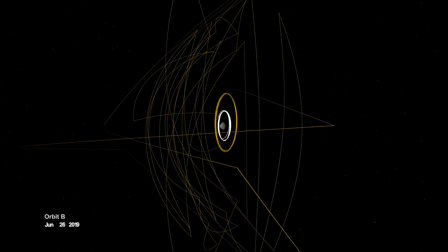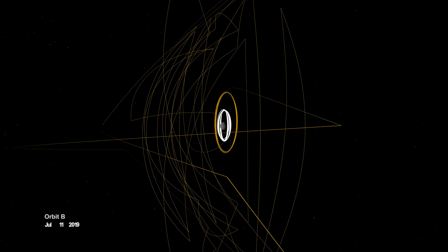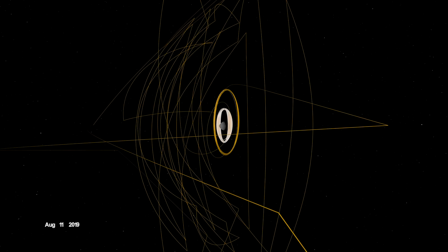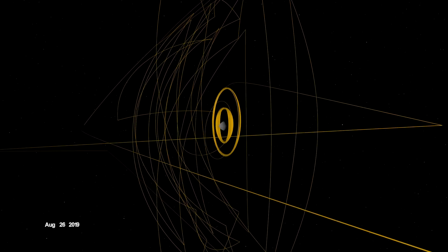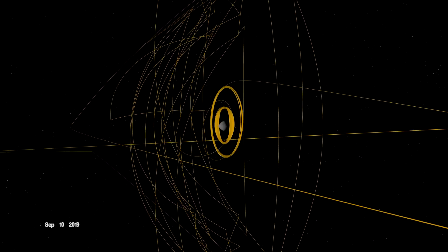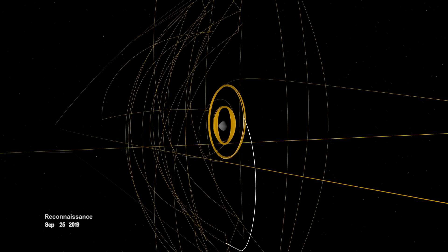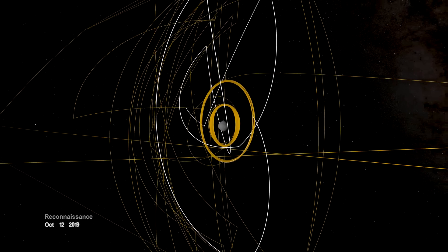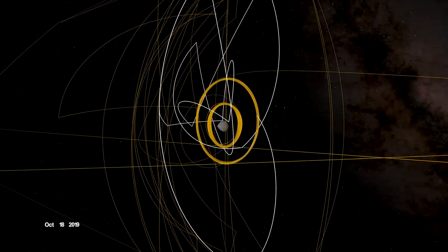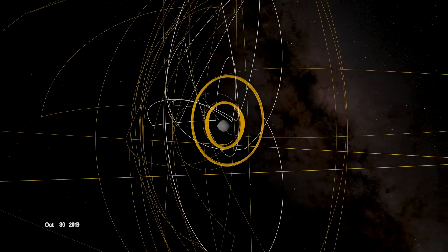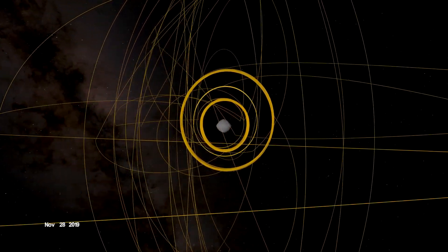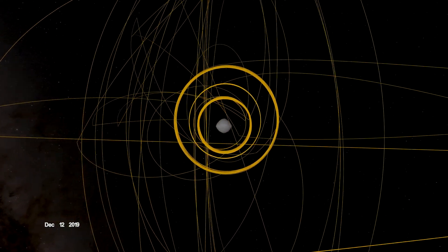On June 12, the spacecraft entered a new orbit at an altitude of just 680 meters, setting another record and establishing a home orbit for the remainder of the mission. In September, it began reconnaissance on four candidate sample collection sites, potential locations on Bennu to touch down and collect a sample later in the mission.